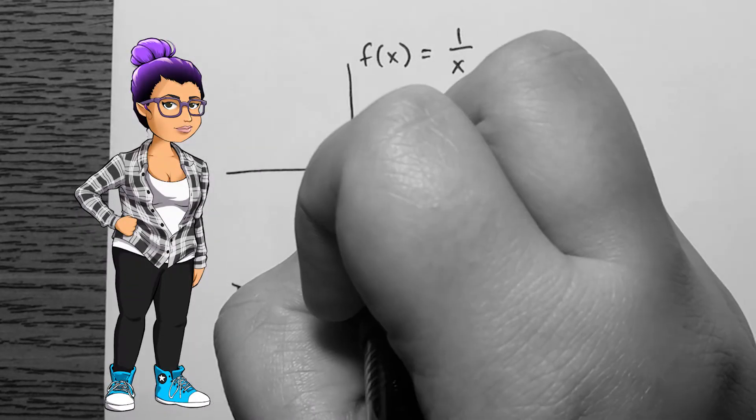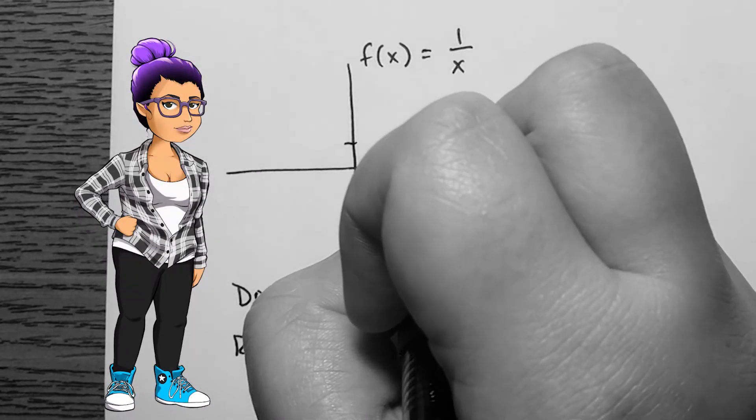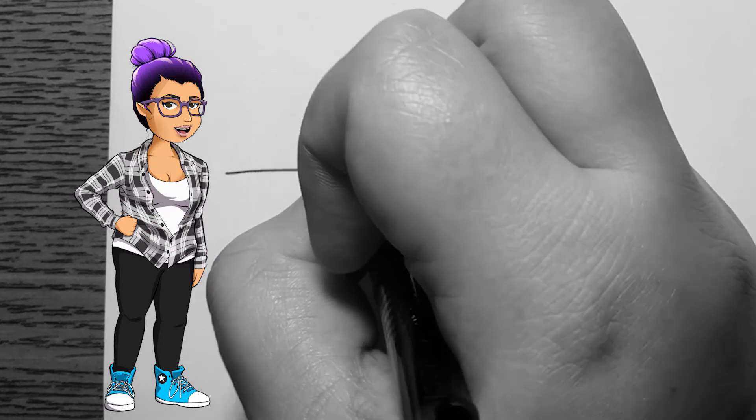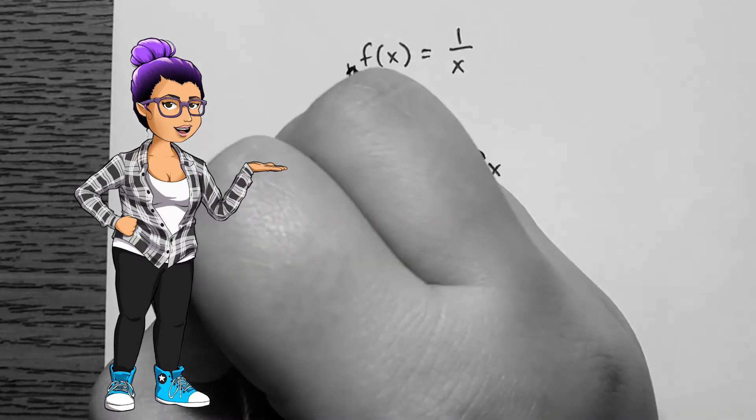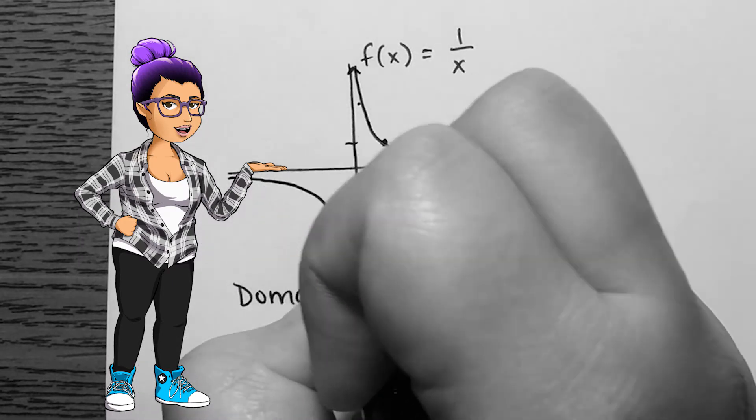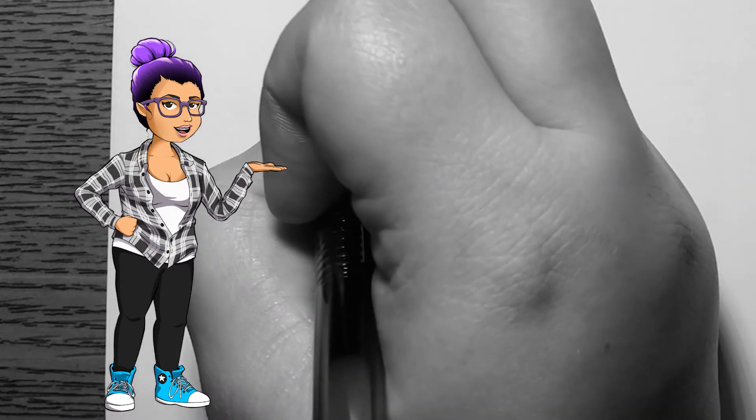The reciprocal function can be written as f of x equals 1 over x. Whatever x value goes in will have its reciprocal come out. The result is a strange looking graph that includes asymptotes, which are invisible lines that cannot be crossed at the end behavior.